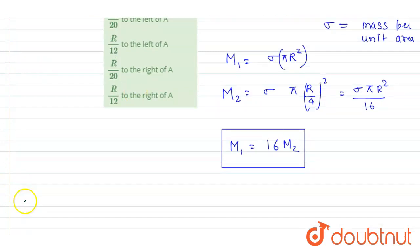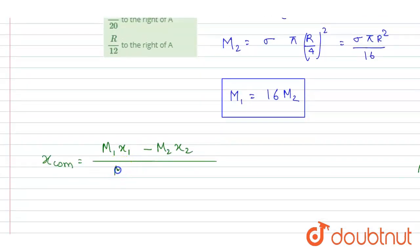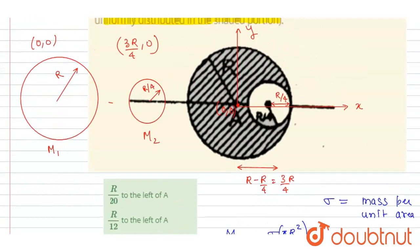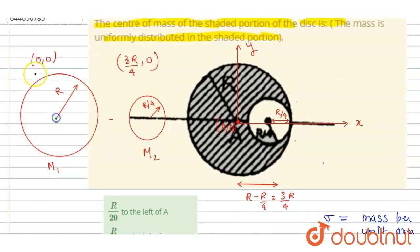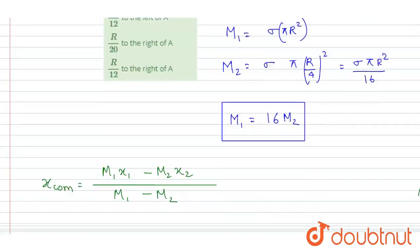Since mass is proportional to area, now I will write down the formula. The x coordinate of the center of mass is equal to m1 x1 minus m2 x2 upon m1 minus m2. The x coordinate of the m1 mass lies at the origin, so it will be 0.